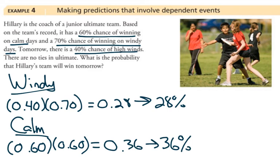So 28% chance of winning and being windy. To get the overall probability that they will win we add those up and we get that there is a 64% chance that this team will win.